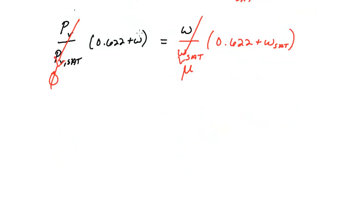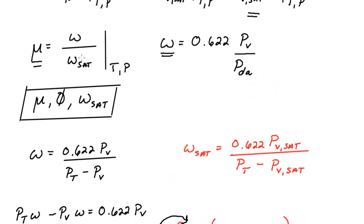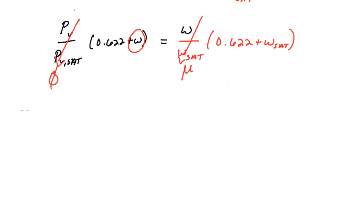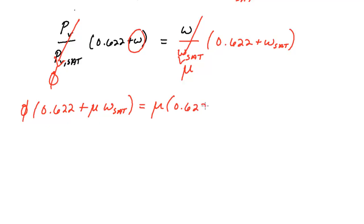Now I want to eliminate the omega term. Since mu equals omega over omega_sat, omega equals mu times omega_sat. Substituting and cleaning up, we get: relative humidity times (0.622 plus mu times omega_sat) equals mu times (0.622 plus omega_sat). At this point we already have a relationship between the three components we wanted: relative humidity, degree of saturation, and humidity ratio at saturation. We'll go ahead and solve explicitly for mu.